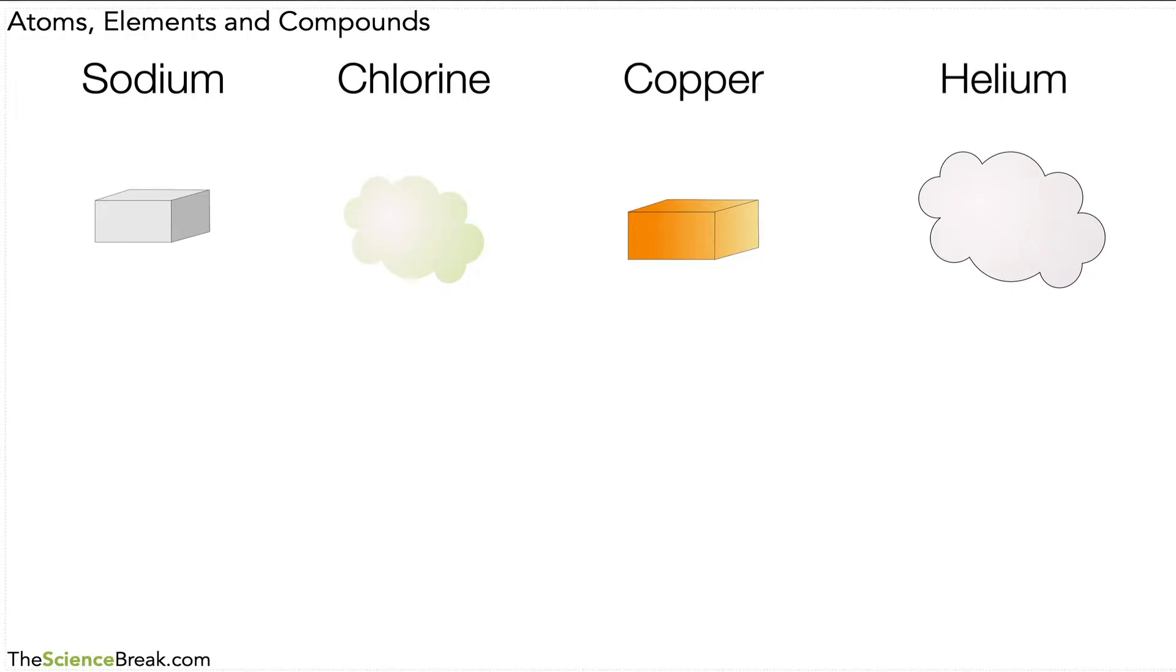Now let's take an example of just a few of the elements from that periodic table. Here I've got some sodium, some chlorine, some copper and some helium. These are all elements from the periodic table, and sodium is a solid metal, chlorine is a gas that's a non-metal, copper is a metal and helium is a gas that's a non-metal as well, all on the periodic table.